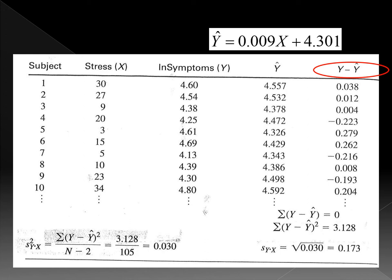Therefore, for subject 1, x is 30. If you plug 30 into this formula, then predicted y is 4.557. Then the error y minus y hat is 0.038. So you use 4.60 minus 4.557, you will get 0.038.